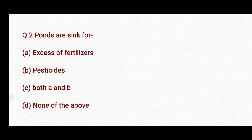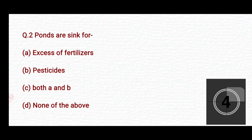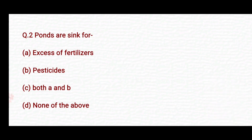Ponds are a sink for — your options are: Option A: excess of fertilizers; Option B: pesticides; Option C: both A and B; Option D: none of the above. The right answer is Option C — both A and B.